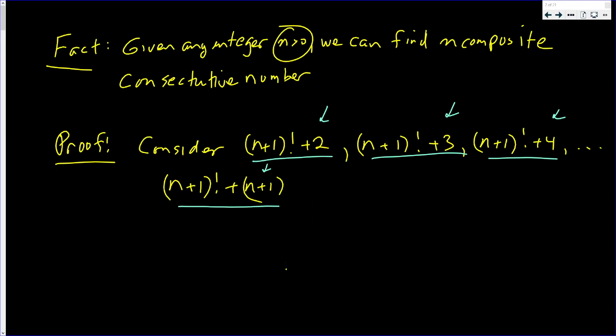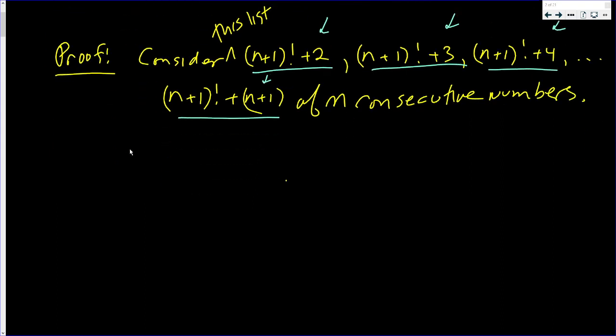Consider this list of n consecutive numbers. I claim absolutely none of them are prime. Now, let's just look at that for a moment. You have (n+1)! factorial. Notice that the number being added is always smaller than or equal to n+1.